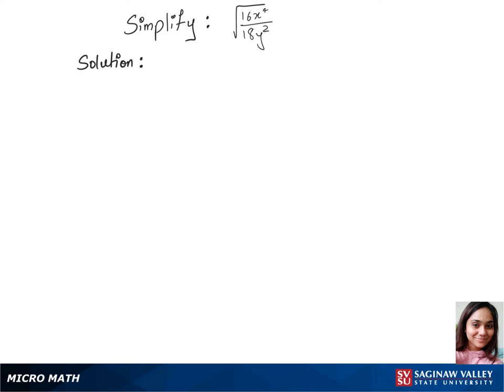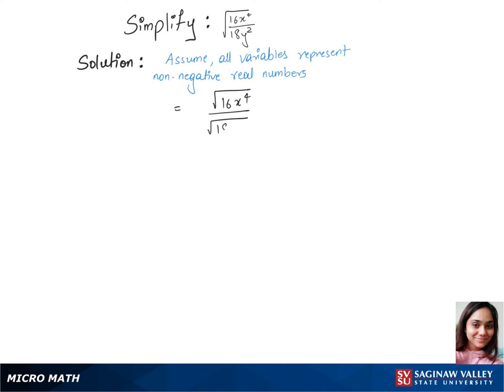Let's simplify this question. We'll assume all variables represent non-negative real numbers. We'll separate the square root first between 16x power 4 and 18y square. Now let's write square root of...